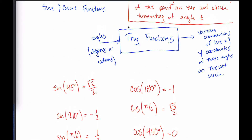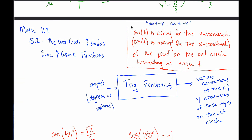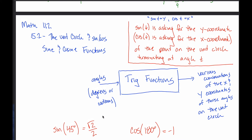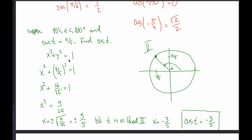Before ending this video, a couple of notational things. Where we define the sine and cosine functions as returning the y and x coordinates of a point on the unit circle, this is sometimes captured with the shorthand: sine of t equals y, cosine of t equals x. And along those same lines, the equation of the unit circle — x squared plus y squared equals 1 — we can change x into cosine of t and y into sine of t to get a new form: cosine squared t plus sine squared t equals 1.